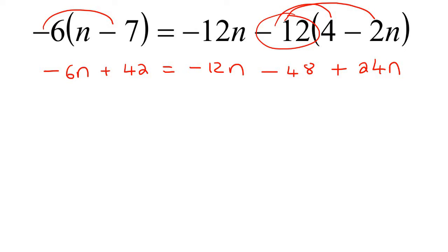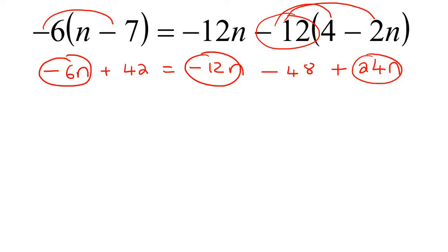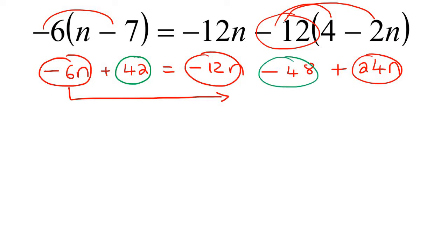Now we're at that all too familiar place where we've got variables and we've got numbers, and you just need to put all the variables together and all the numbers together. The three variables I can see, I'm going to choose to put all of them on the right-hand side. So that means this negative 6n is going to have to move over. Then the numbers — the 42 and the negative 48 — they're going to have to go to the left-hand side, so the negative 48 is going to move over to the left.